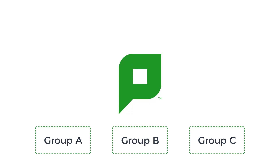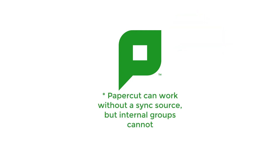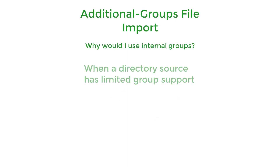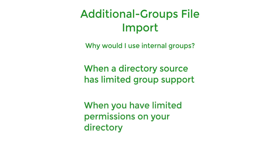Finally, we have the use of internal groups, which are created by PaperCut and exist only within your PaperCut system. An important thing to note when using internal groups is that you must have a user sync source created. During the initial installation process, PaperCut allows you to skip the creation of a sync source. However, without this configuration, the additional groups text file will fail to import. Using internal groups is very useful when the directory source that you're syncing has limited group support, or if you have limited access that prevents you from seeing all the necessary organizational units or security groups.